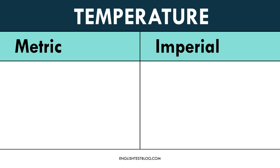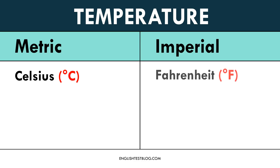Finally, let's compare temperature. In the metric system, Celsius is used — water freezes at 0 degrees Celsius and boils at 100 degrees Celsius. In the imperial system, Fahrenheit is used — water freezes at 32 degrees Fahrenheit and boils at 212 degrees Fahrenheit.